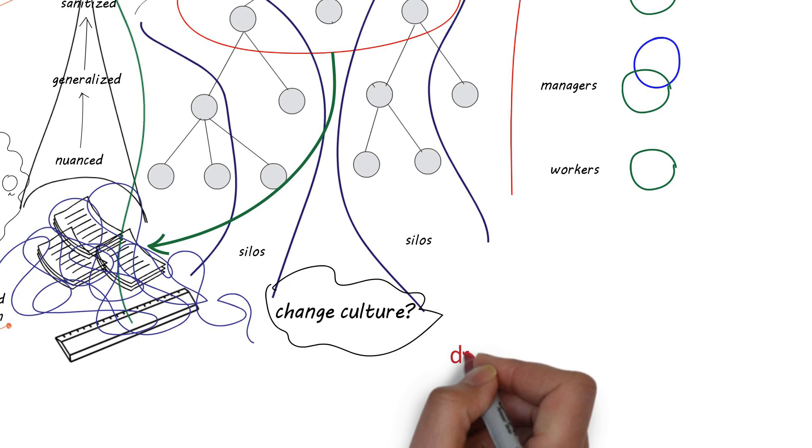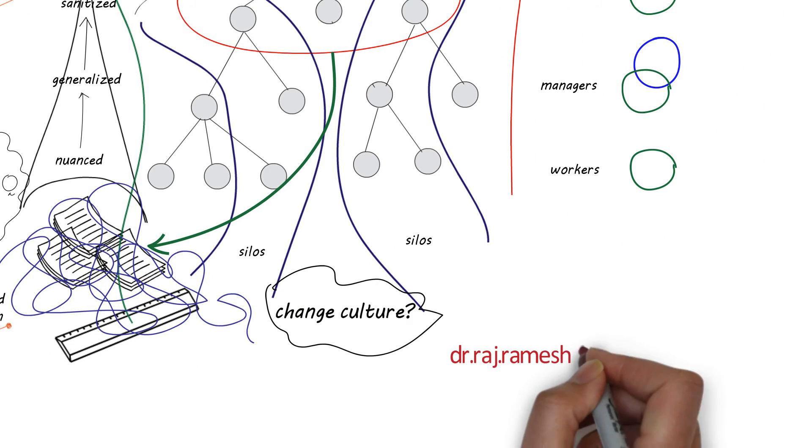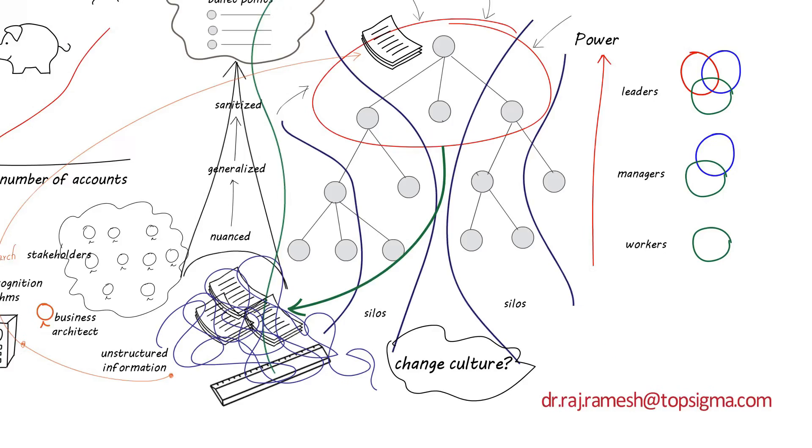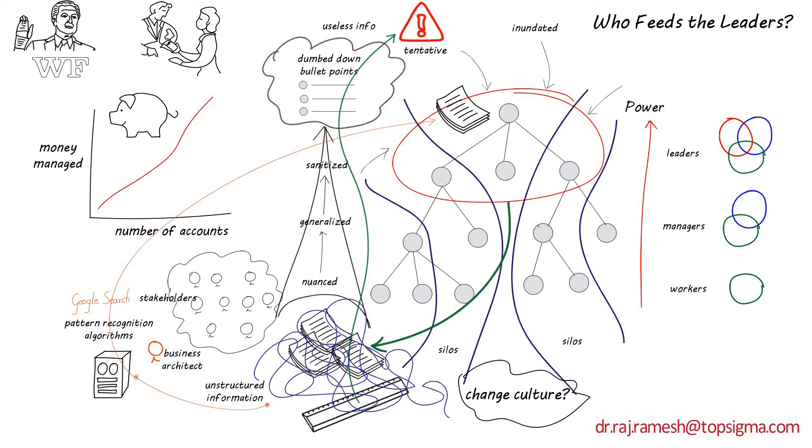Today, real decision makers are those that control and manage the information. So only what should flow up in their eyes goes up. The fallout from Wells Fargo fiasco is one example.